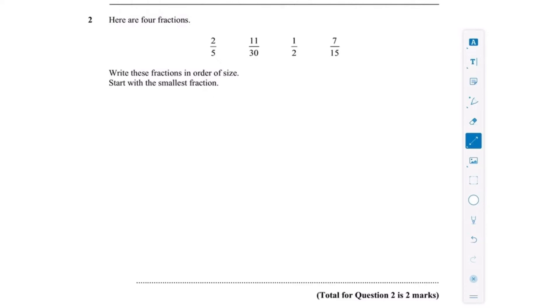This first question is from a non-calculator paper. In order to answer this question, we need to order these fractions from smallest to biggest. To compare the fractions, it's going to be much easier if our denominators are the same. We're looking for a number that's in the 5 times table, the 30 times table, the 2 times table, and the 15 times table. In this case, that would be 30. So I'm going to rewrite all of these fractions out of 30.